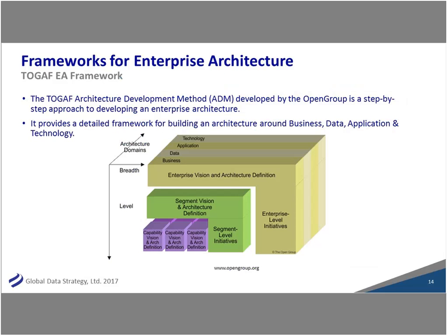Another framework is TOGAF from the Open Group. There's a lot of documentation so it can seem more complicated at the surface, but complexity is in the eye of the beholder. The same idea applies: looking at business, data, applications, and technology across the organization. You can go broad across all areas and then drill deep into one. When I was doing detailed enterprise architecture, each group — data, applications, networks — would go very deep, and the high level was where we all met in the middle.